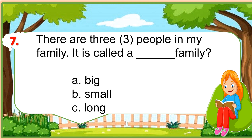Number 7 question: There are 3 people in my family. It is called a blank family. A. Big. B. Small. C. Long. What's the correct answer?